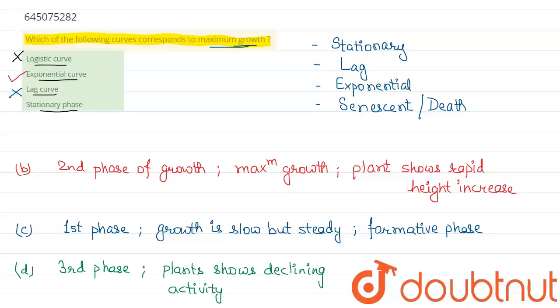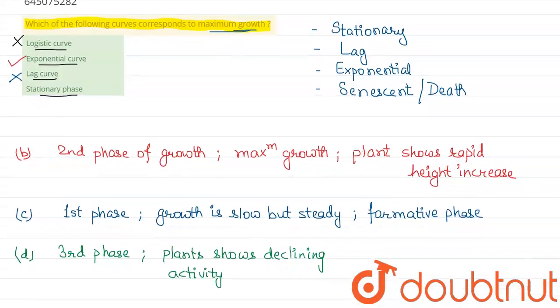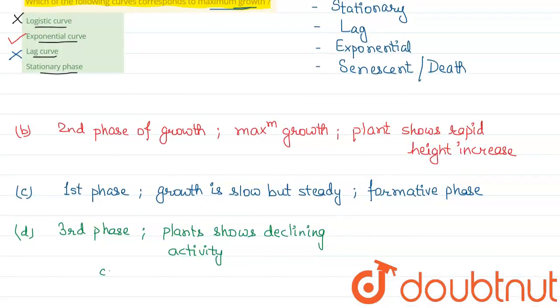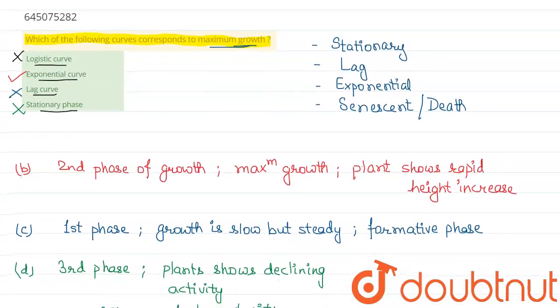And this phase corresponds to the maturity of cells of plants. So it corresponds to maturity of cells and not maximum growth, so this option is also wrong. Hence, we have the final answer as: among the following curves, the one which corresponds to maximum growth is exponential curve.